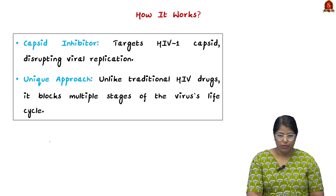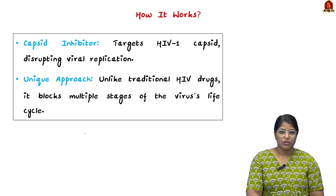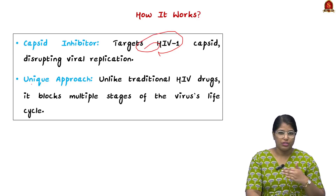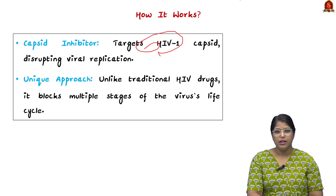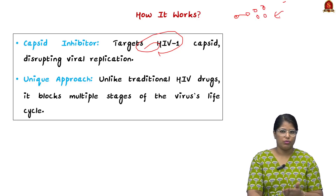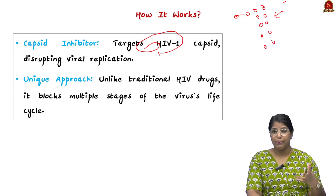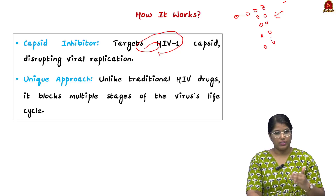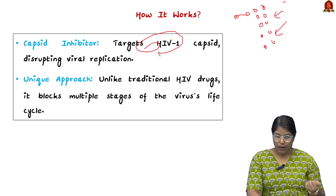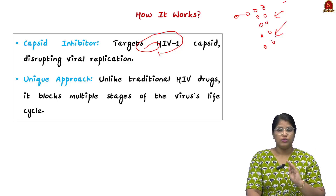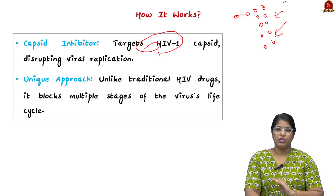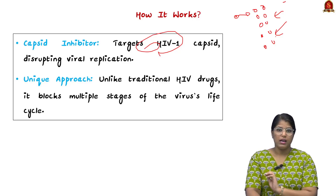Moving on, we shall see how it works. This is the first type of drug which actually targets the HIV-1 capsid and disrupts viral replication. HIV replicates very tremendously because the immune system is suppressed, which leads to rapid duplication of the virus. Schemes in our country give antiretrovirals to reduce the load of this virus, suppressing symptoms and increasing life expectancy.